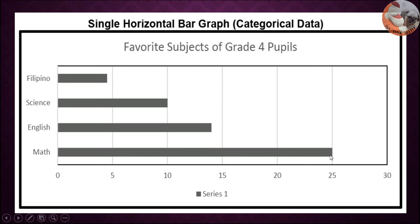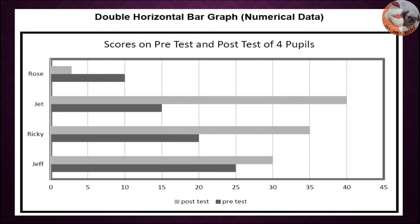Next we have double horizontal bar graph. The title of the graph is scores on pre-test and post-test of four pupils. So here are the four pupils and the bar at the top represents the scores of each pupil in post-test, and the bar at the bottom represents the scores of each pupil in pre-test.